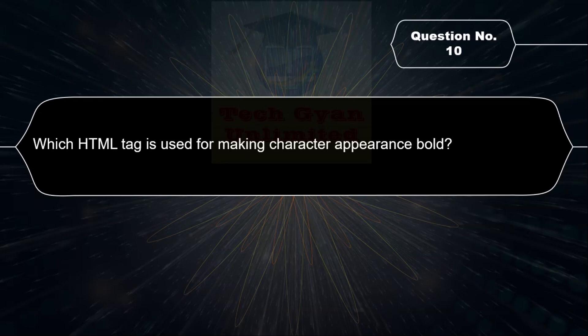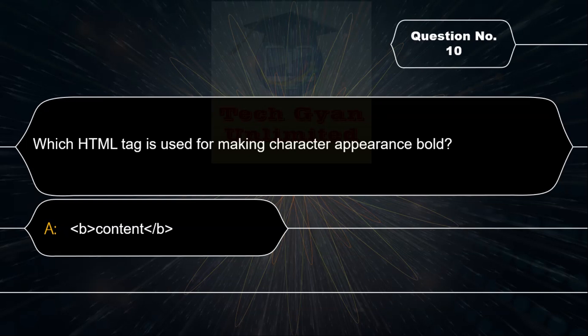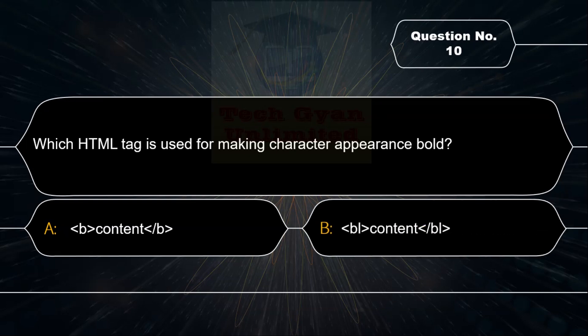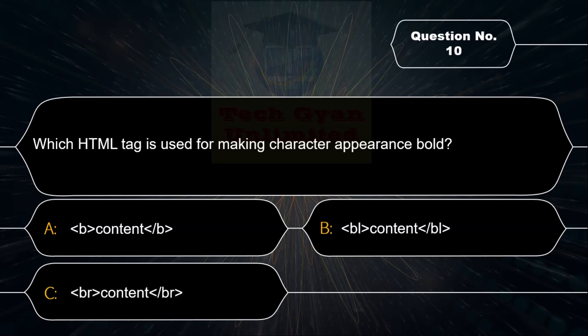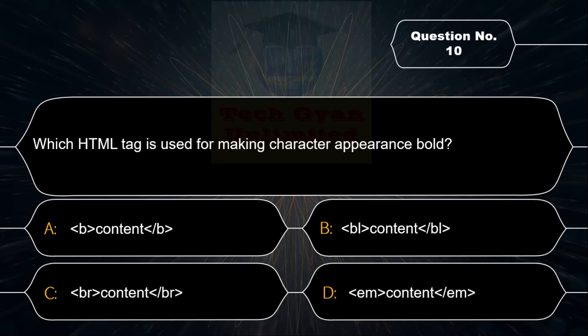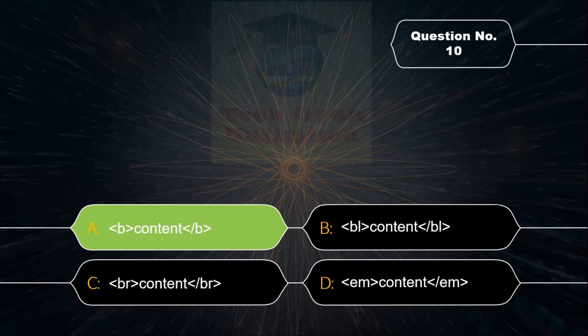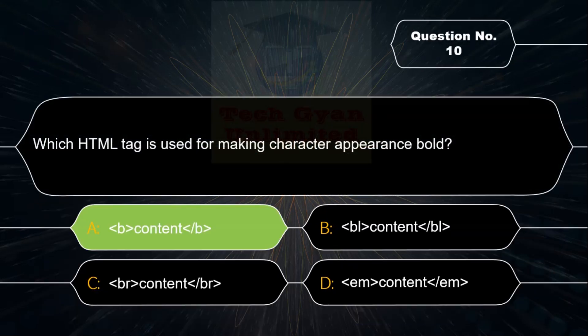Which HTML tag is used for making character appearance bold? Option A: &lt;B&gt;content&lt;/B&gt;, Option B: &lt;BL&gt;content&lt;/BL&gt;, Option C: &lt;VR&gt;content&lt;/VR&gt;, Option D: &lt;EM&gt;content&lt;/EM&gt;. Correct answer is Option A — the Bold tag &lt;B&gt; is used to make character appearance bold in HTML.